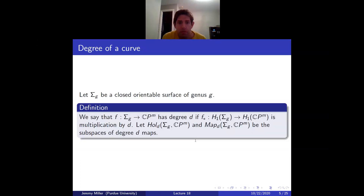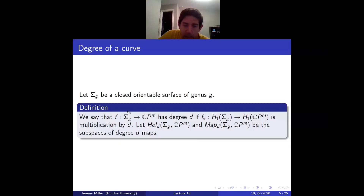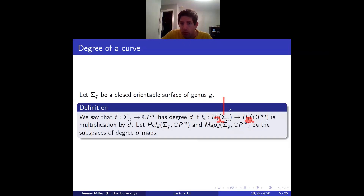Let me define the degree of a curve in CP^m. A surface of genus g is a one-dimensional complex manifold — a real surface but a complex curve. If you have a continuous map from an orientable closed Riemann surface into CP^m, we define the degree to be the induced map on H_2. Both H_2 of the Riemann surface and H_2 of CP^m are isomorphic to Z. We let Hol_d and Maps_d denote the subspaces of degree-d maps.